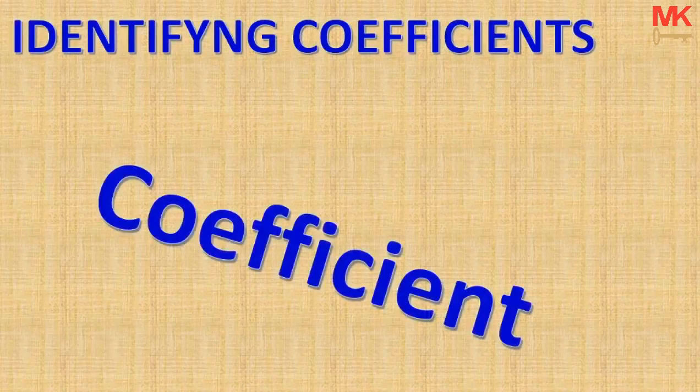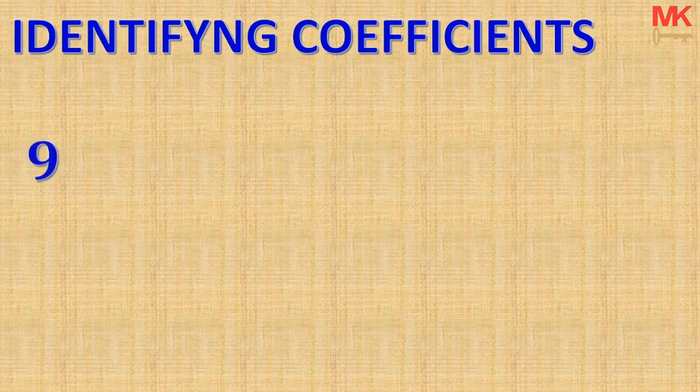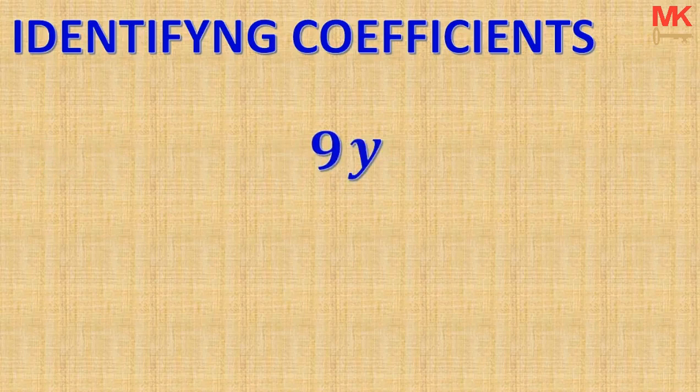What is a coefficient? A coefficient is simply a number that is written in front of a letter — a number that is joined to a letter. Supposing we have the number 9 and the letter Y. If we join this 9 to the letter Y by a multiplication operation, then the 9 becomes the coefficient of the letter Y.